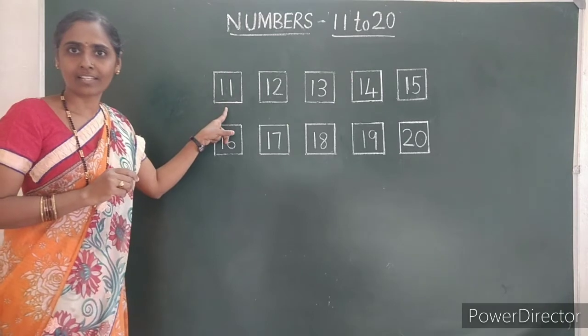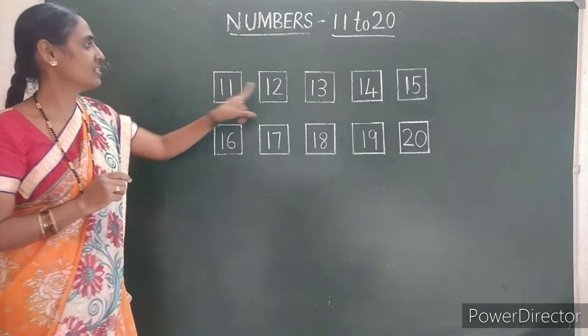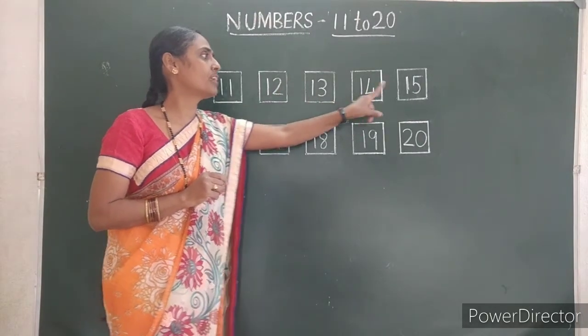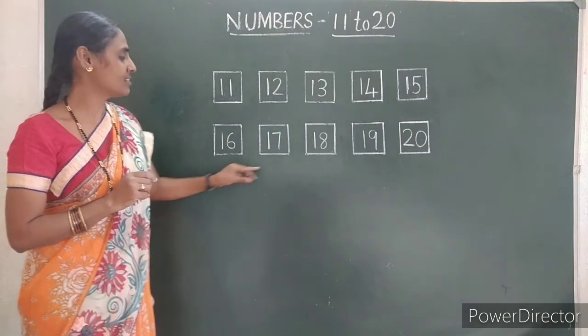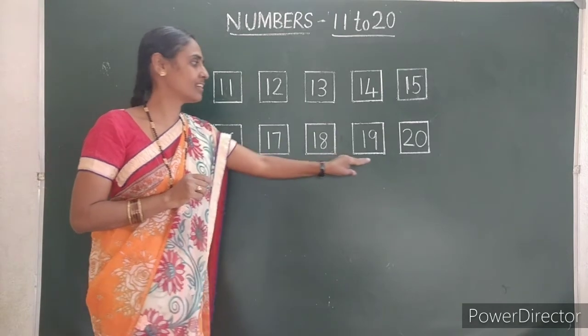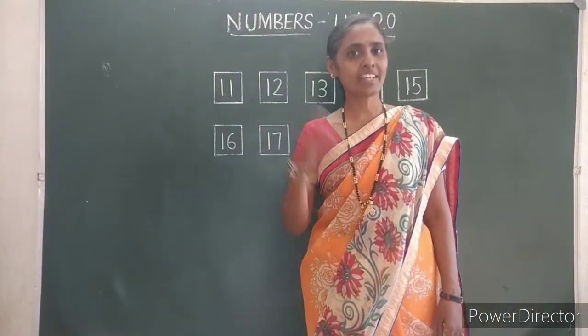Let us read once. Eleven. Twelve. Thirteen. Fourteen. Fifteen. Sixteen. Nineteen. Seventeen. Eighteen. Nineteen. Let us count.